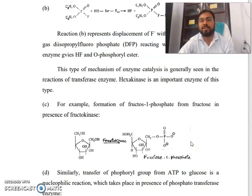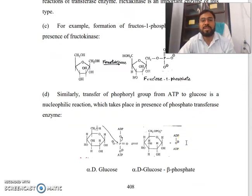Very important reaction for this chapter. This is unit 3 of bio-organic chemistry semester 3. Similarly, transfer of phosphoryl group from ATP to glucose is a nucleophilic reaction which takes place in the presence of phosphate transferase enzyme. You can see here alpha-D-glucose and alpha-D-glucose-beta-phosphate.